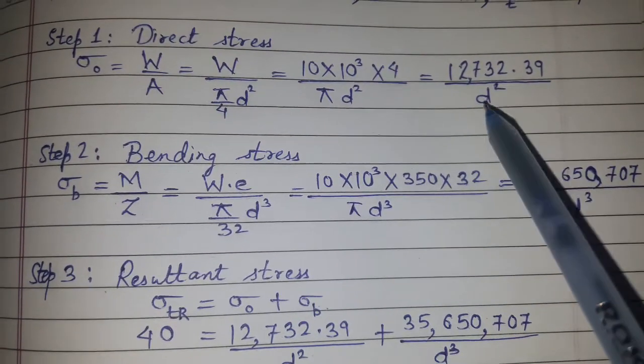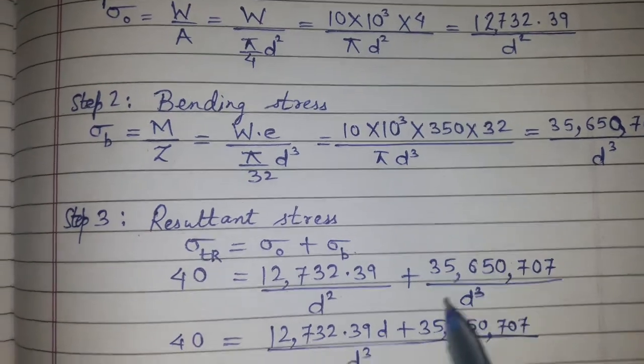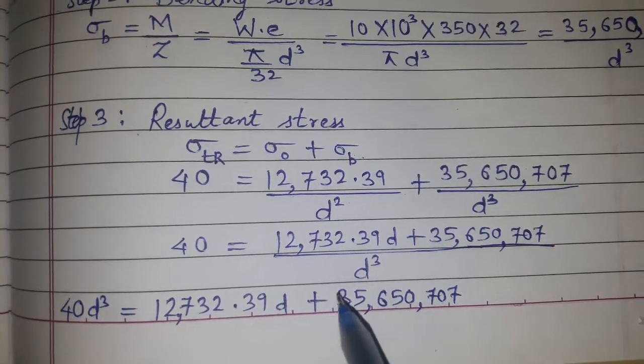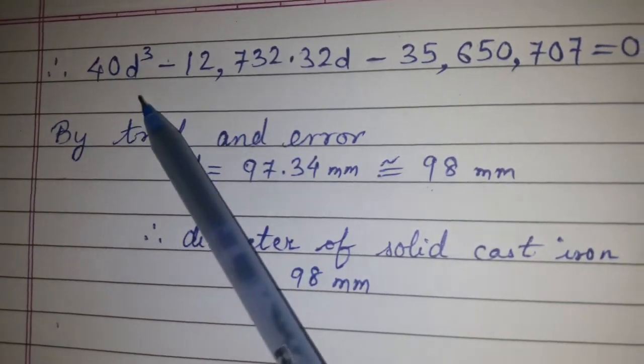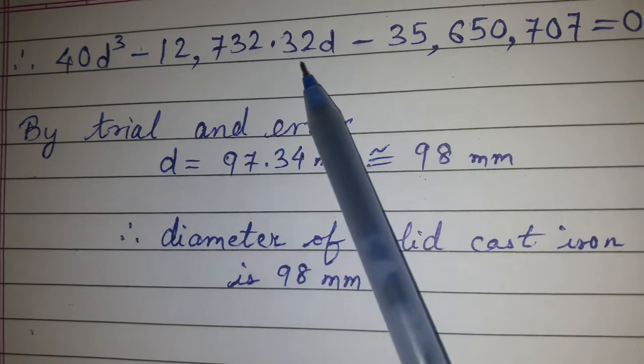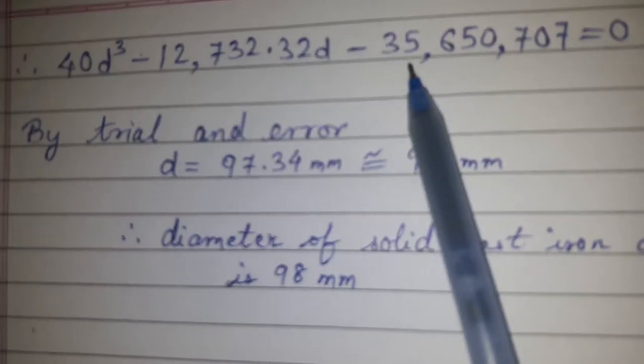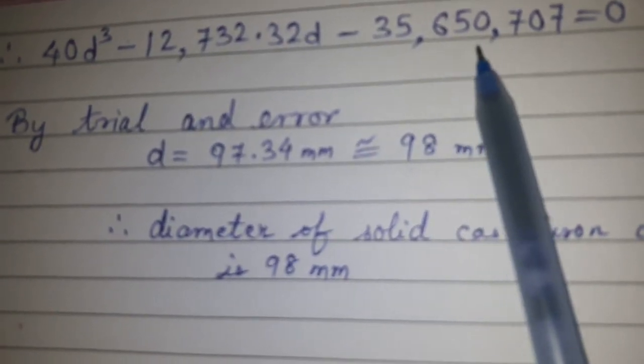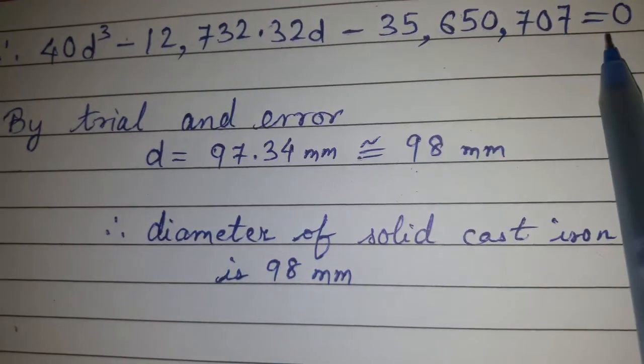Substituting and simplifying: 40 = 12,732.39/d² + 35,650,707/d³, which gives us the cubic equation: 40d³ - 12,732.32d - 35,650,707 = 0.